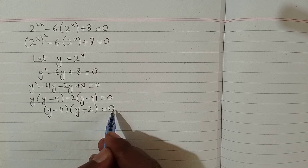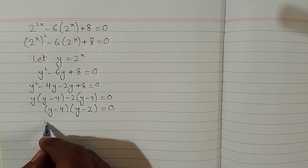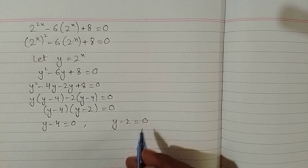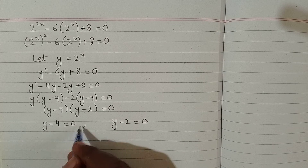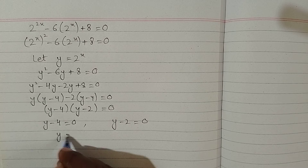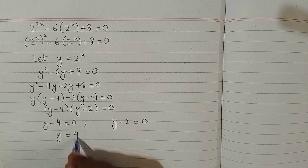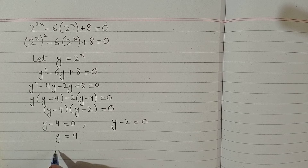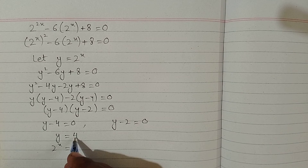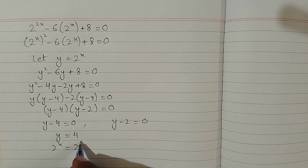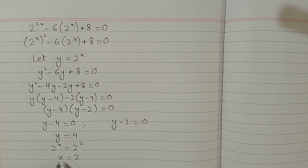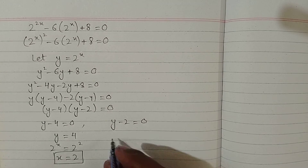Since the product of two factors is 0, either factor is 0. From y minus 4 equals 0 we get y equals 4. Substituting back y equals 2^x, and writing 4 as 2 squared, the bases are the same so the powers are equal, giving x equals 2.